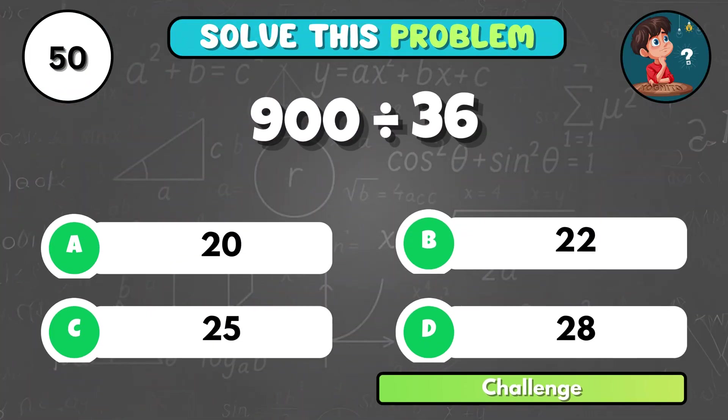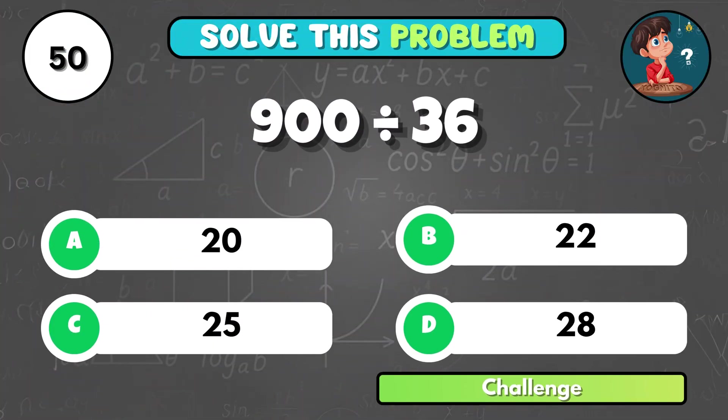How many groups of 36 are there in 900? That's C, 25.